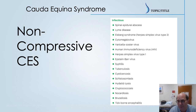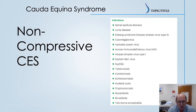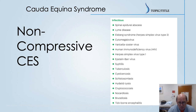Infectious causes include abscess — which you'll see on MRI — but it can produce the syndrome. Lyme disease, HSV2, cytomegalovirus, varicella zoster, and HIV are all viruses that can produce an inflammatory response within the spinal canal and, if attacking the nerves of the cauda equina, can produce cauda equina syndrome. Other infectious causes include syphilis, Epstein-Barr virus, cysticercosis, schistosomiasis, and fungal infections such as cryptococcosis and nocardiosis. The list goes on — these are very rare, but infectious causes can produce that inflammation and cause a non-compressive cauda equina syndrome.